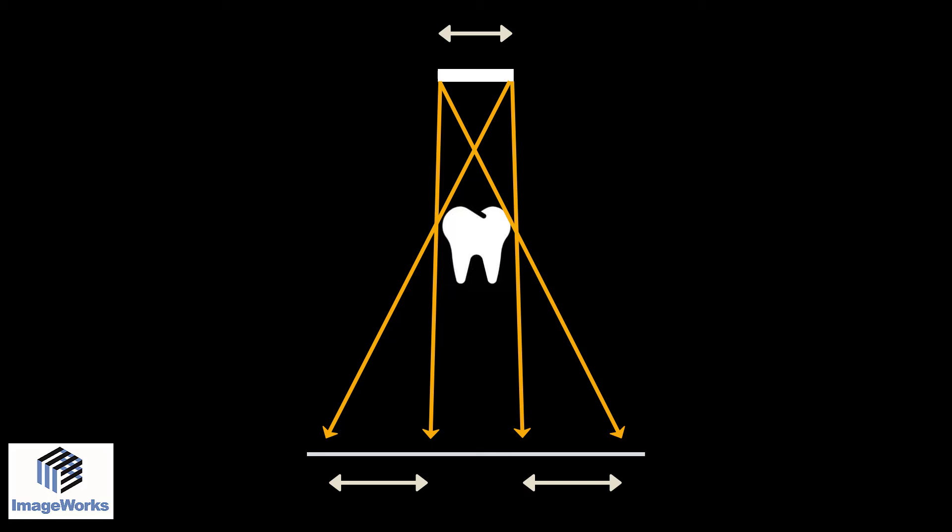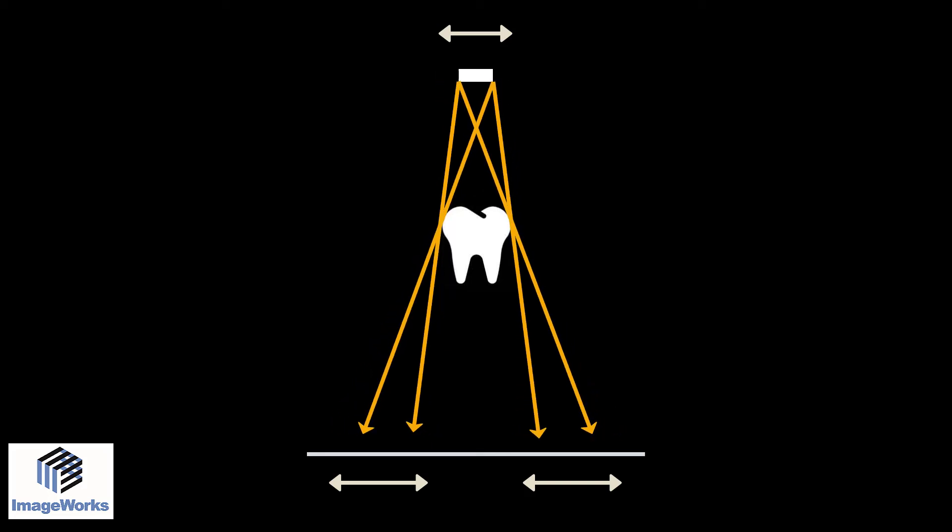If the size of this focal spot can be reduced, this will then reduce the range of this information overlap, which translates into better edge sharpness of the anatomy being imaged.